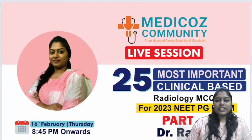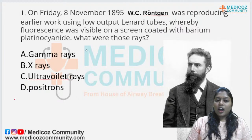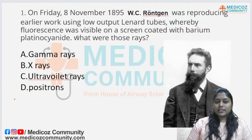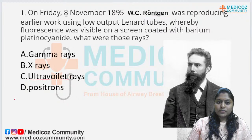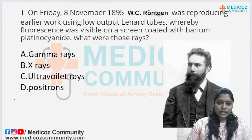Coming to today's session, we will be discussing 15 questions today and 10 questions on 18th Feb at 8:45 pm. I would like students to answer questions in the chat box for an interactive session. Coming to the first and easiest question — all questions are clinical-based, some are one-liners just like in the PG exam. On Friday, 8th November 1895, W.C. Roentgen was reproducing earlier work using low-output linear tubes, whereby fluorescence was visible on a screen coated with barium platinocyanide. What were those rays?